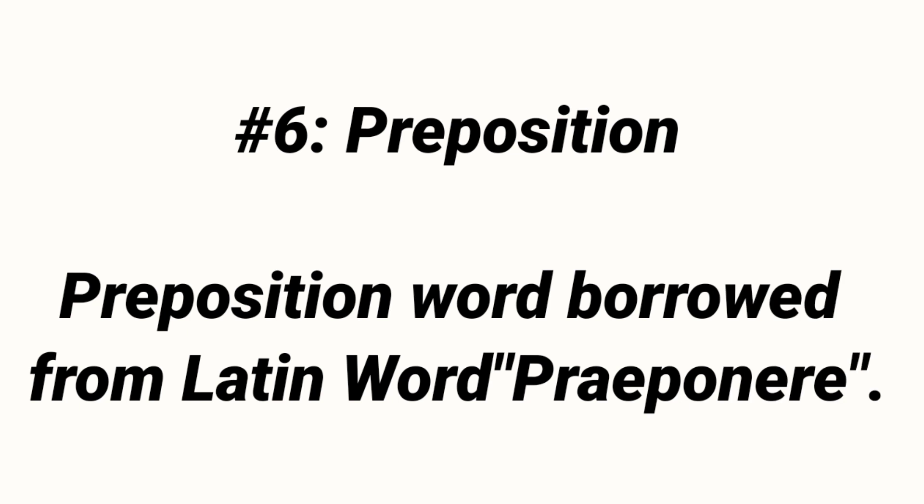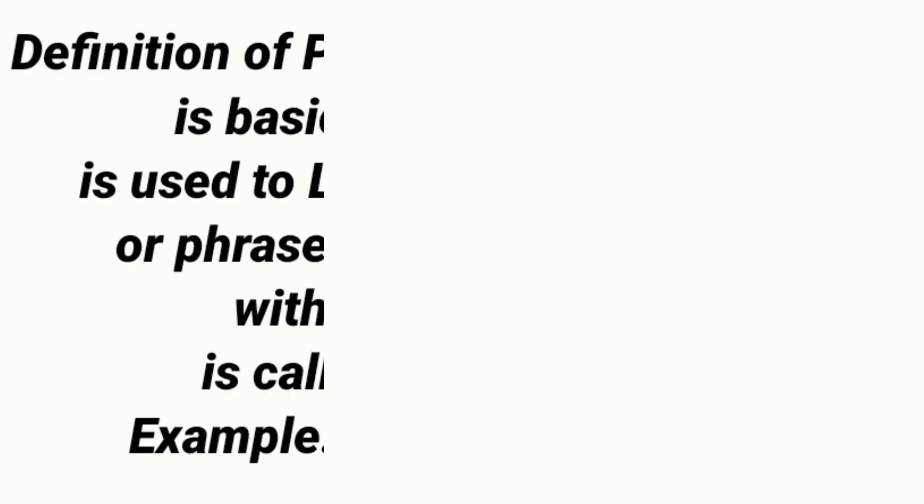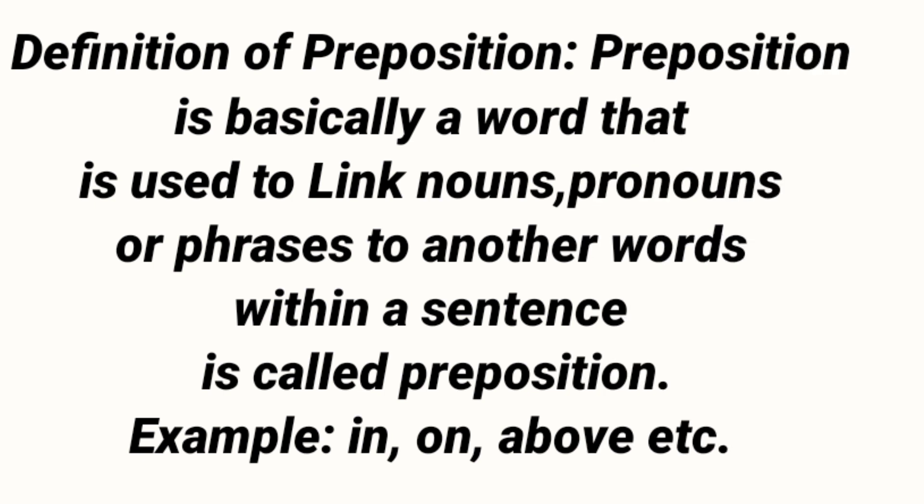Number six: Preposition. Preposition word is derived from the Latin word 'praeponere'. Definition of preposition: A preposition is basically a word that is used to link nouns, pronouns, or phrases to other words within a sentence, is called preposition. Preposition bunyadi taur par ek aisa jumla hai jo noun aur phrases ko doosre sentence ke saath jodne ke liye istamal kiya jaata hai. Examples: in, on, above, etc.